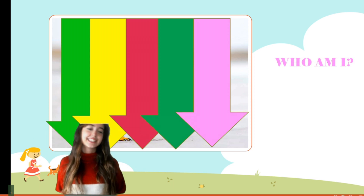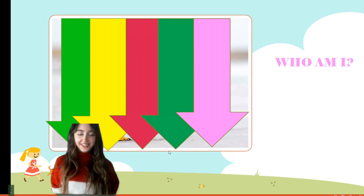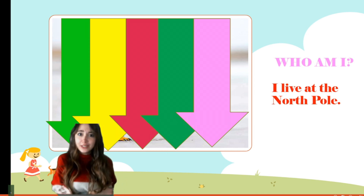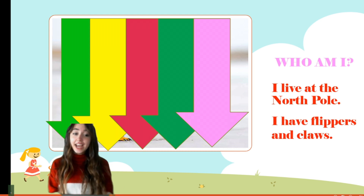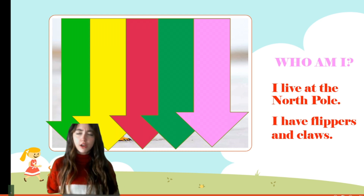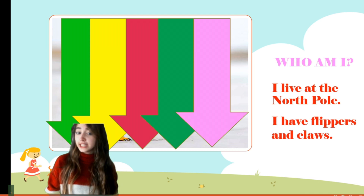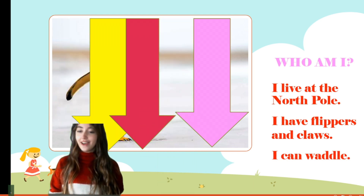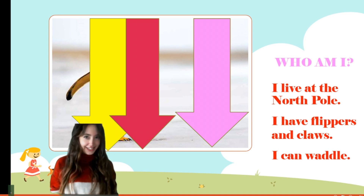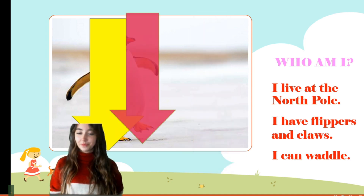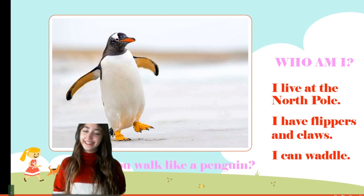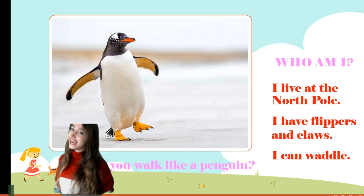Now let's see the next animal. I live at the North Pole — it must be very cold there. I have flippers, so it must be a sea animal. And I can waddle. Did you find the animal? Look, it's a penguin! Can you walk like them?